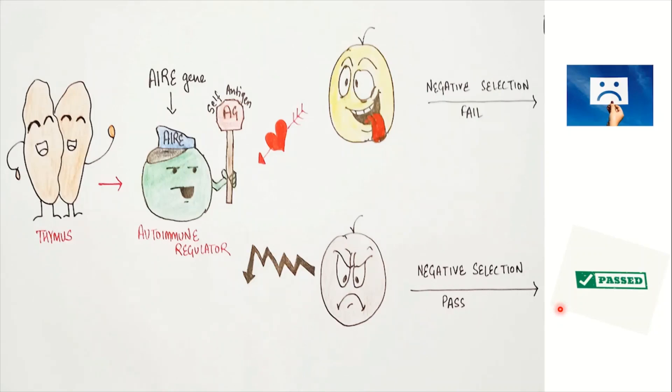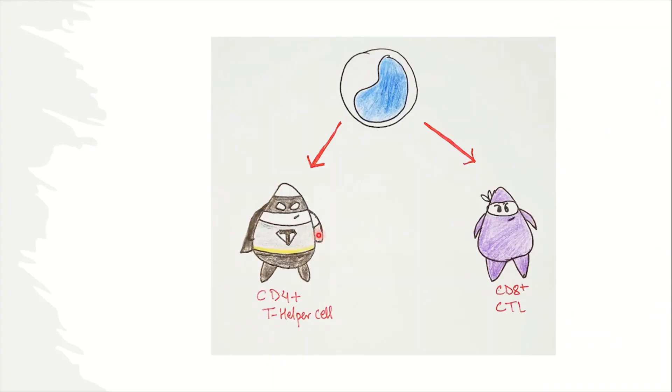Hence, at the end, we get a CD4 positive cell that recognizes your MHC class 2 and a CD8 positive cell that recognizes your MHC class 1 and doesn't bind to the self-antigens. This is the mechanism of central tolerance.